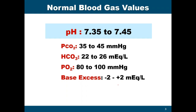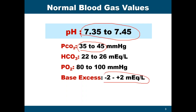An easier way to remember the normal values is that your pH and your pCO2 are somewhat similar — they both share 35 and 45, so that is an easy way to remember those values. Regarding base excess, if the result is negative it means the patient is having acidosis, and if the result is positive the patient is having alkalosis.